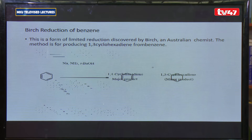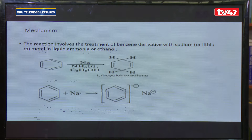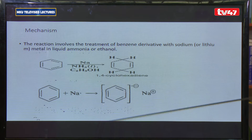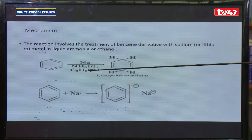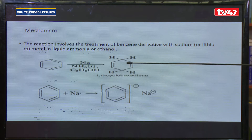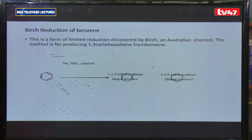This reaction is referred to as Birch reduction, named after the Australian chemist who discovered it. Looking at the mechanism, the reduction of benzene in the presence of sodium metal and ammonia results in the addition of one molecule of hydrogen per molecule of benzene, at either position 1,4 or position 1,3, giving a dihydrocyclohexadiene product.